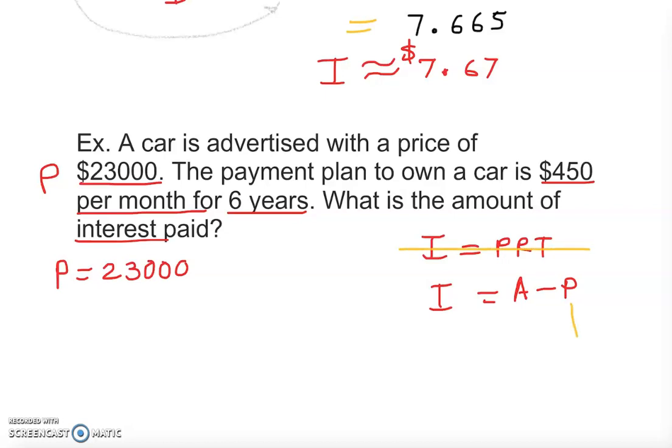We have the principal. Is there any way we can find the total amount? They give us some hints - they said $450 per month for six years. I believe we can find the amount like that: $450 per month, six years. Per month yearly is 12 months, times how many years - 6 years. That would give us the total amount.